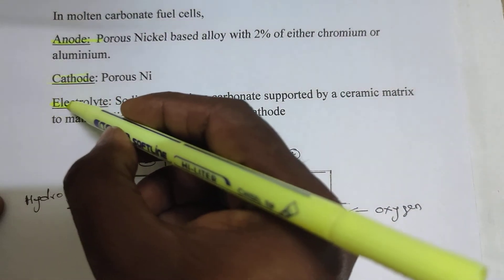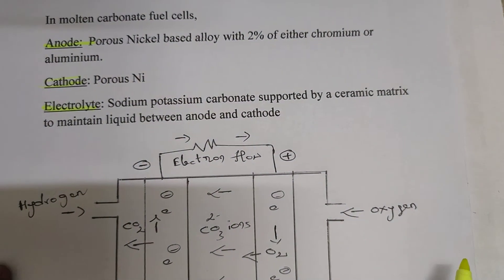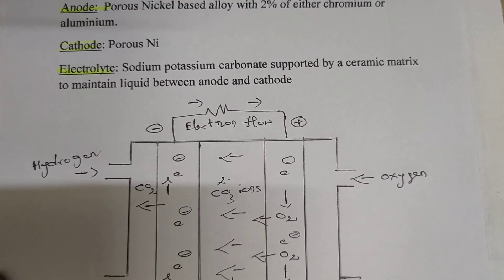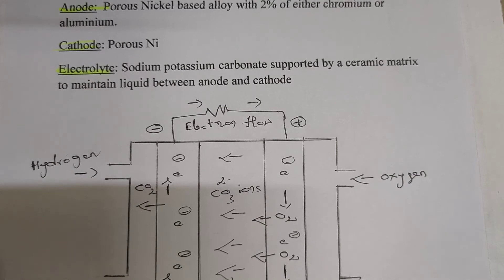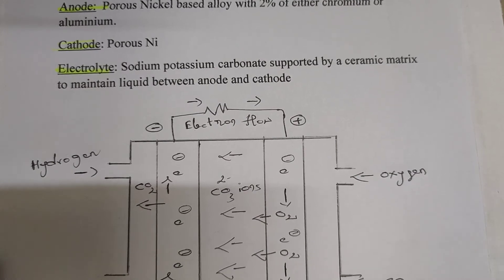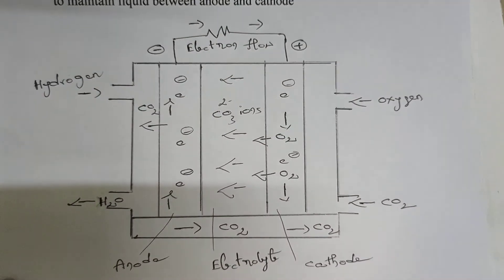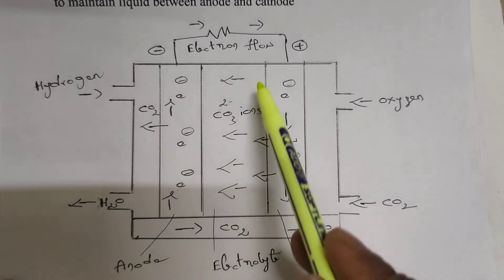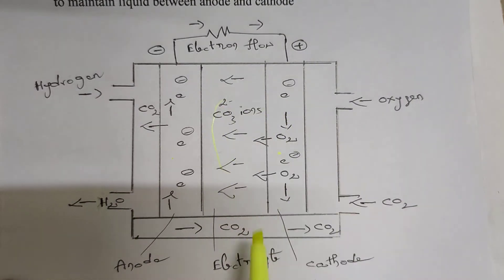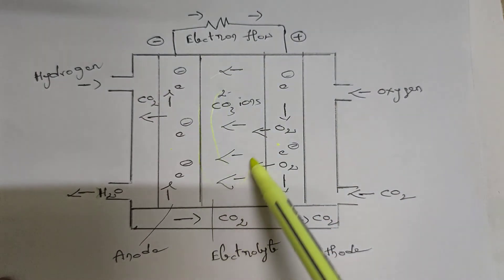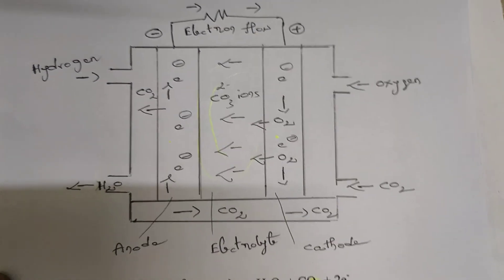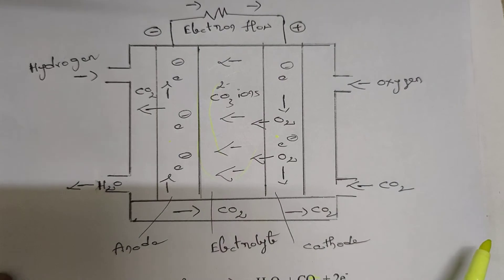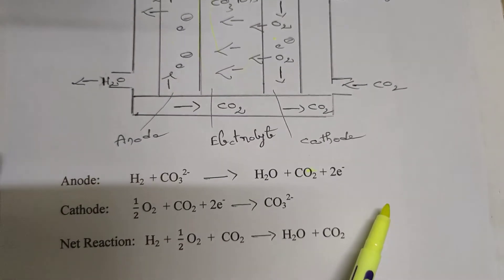The electrolyte is a mixture of sodium-potassium carbonate, which is supported by a ceramic matrix to maintain liquid between the anode and cathode. The carbonate ions are circulated into this matrix. At the anode, hydrogen gas is supplied; at the cathode, oxygen is supplied.